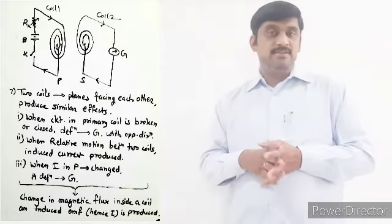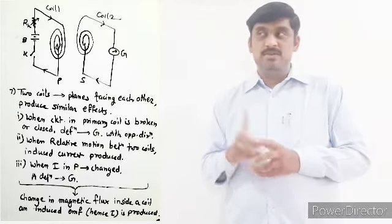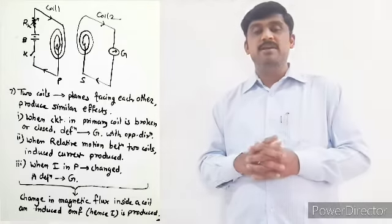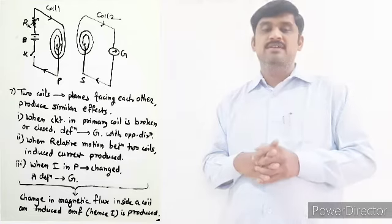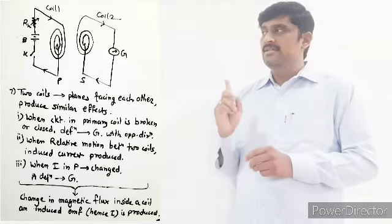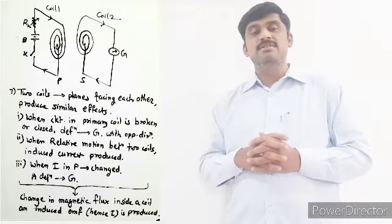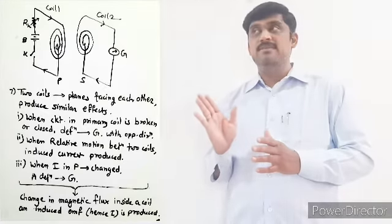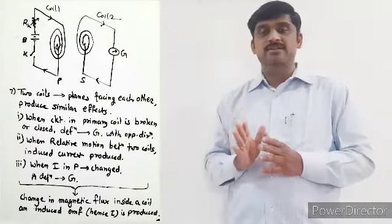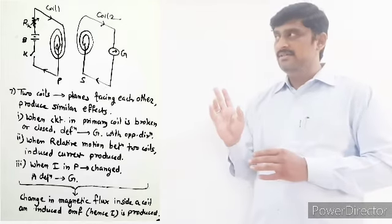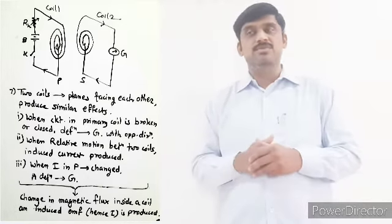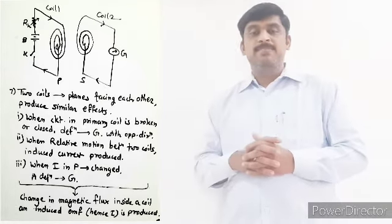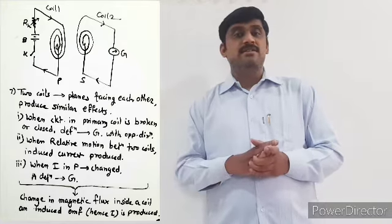We have two coils: coil number one and coil number two. Coil number one is connected in series with a rheostat (RH), a battery, and a key. This coil is called the primary coil. Coil number two is connected to a galvanometer, and that coil is called the secondary coil.